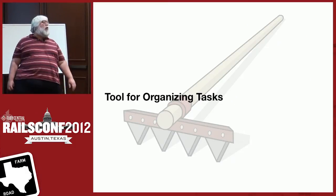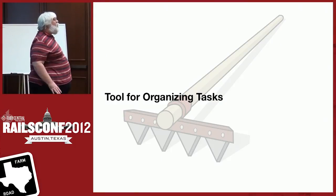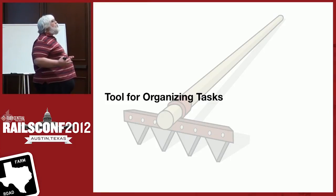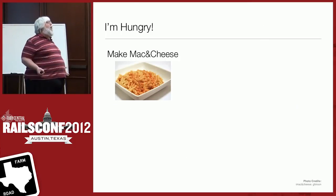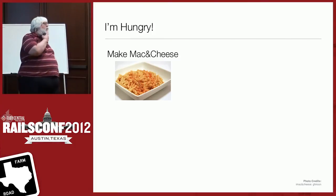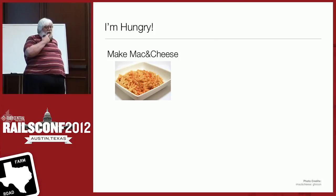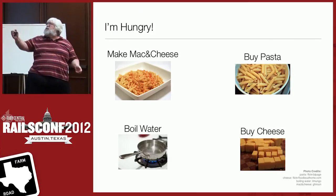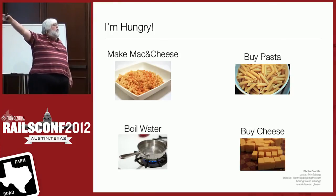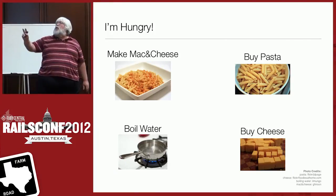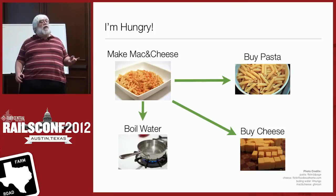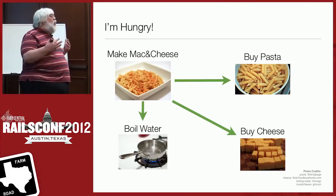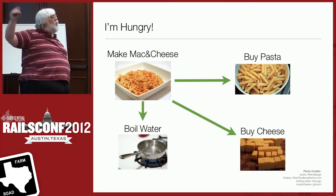Rake is a tool for organizing tasks — tasks are things that need to be done. We're going to start with a concrete example: I'm hungry, let's make some mac and cheese. What do I have to do? I need pasta available, cheese available, and I need to boil the water. These are sub-tasks involved in making the meal, and there are dependencies — in order to make mac and cheese, all these other tasks must be done first. This is the essence of rake: take a task and break it down into component pieces.